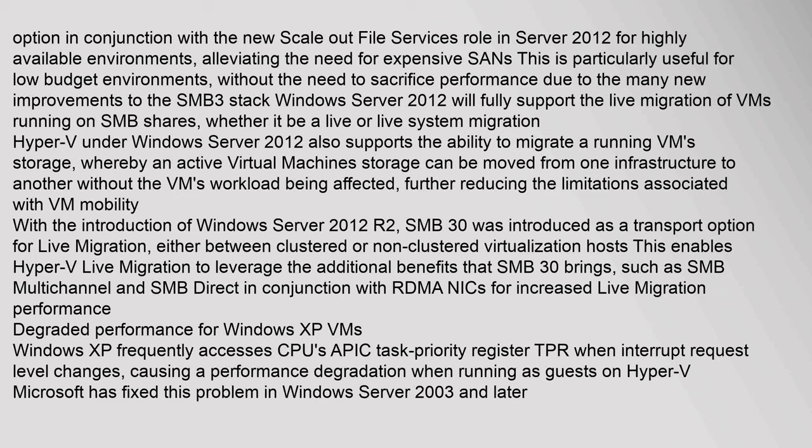Windows Server 2012 will fully support live migration of VMs running on SMB shares, whether a live or live system migration. Hyper-V under Windows Server 2012 also supports the ability to migrate running VM storage, whereby an active virtual machine's storage can be moved from one infrastructure to another without the VM's workload being affected. With the introduction of Windows Server 2012 R2, SMB 3.0 was introduced as a transport option for live migration, either between clustered or non-clustered virtualization hosts. This enables Hyper-V live migration to leverage SMB multi-channel and SMB Direct in conjunction with RDMA NICs for increased live migration performance.